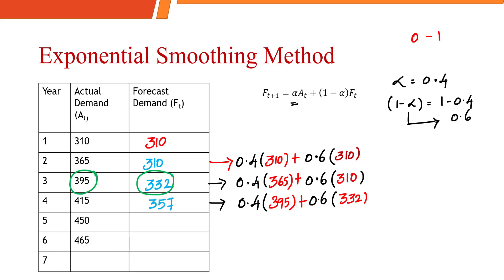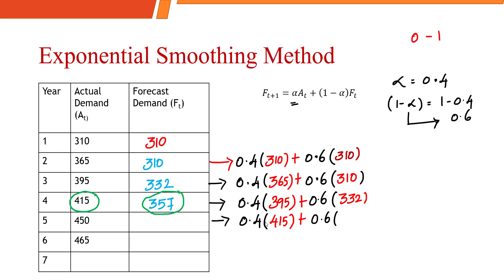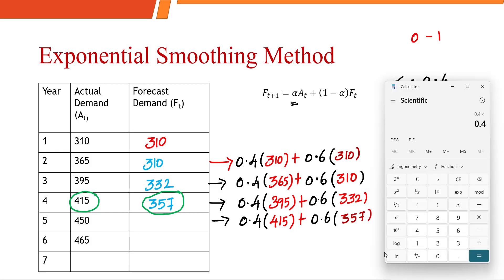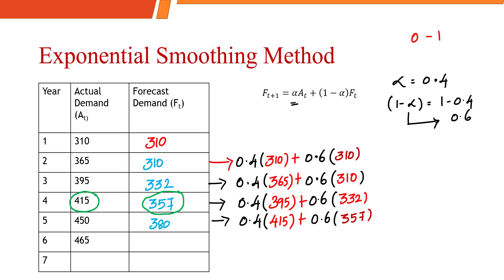Let's calculate the forecasted demand for the 5th year, which is 0.4 into the actual demand of 415 plus 1 minus alpha (0.6) into the forecasted demand of 357. So 0.4 into 415 plus 0.6 into 357 gives us a value of 380.2, rounded to 380.